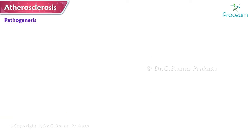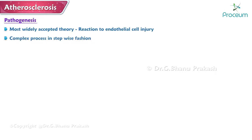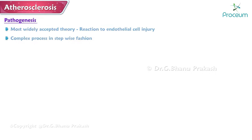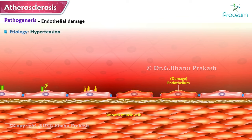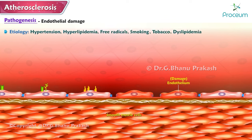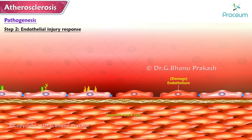The pathogenesis of atherosclerosis: the most widely accepted theory is the reaction to endothelial cell injury. Step 1 — Endothelial Damage: the first step begins with damage to the endothelium of blood vessels. Endothelial cell injury is caused by many factors such as hypertension, hyperlipidemia, free radicals, smoking, tobacco, and dyslipidemia. Regardless of etiology, endothelial damage is always the first step.